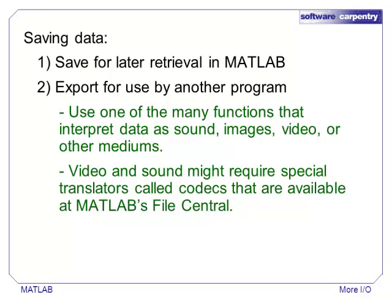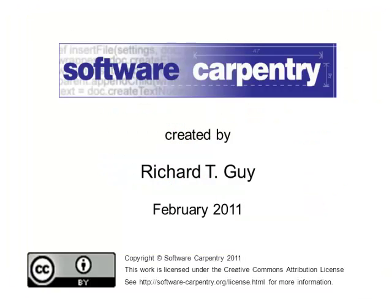MATLAB provides functions to translate arrays or structures into many media formats. Some special video or image formats might require codecs to correctly encode a file, and these can be found at MATLAB's File Central. The important point is that most data can be interpreted as an array. MATLAB can import data in many different formats, and it provides tools to export data structures back into many media and storage formats. In the next episode, we will look at visualization in MATLAB, which includes tools to create plots and images.